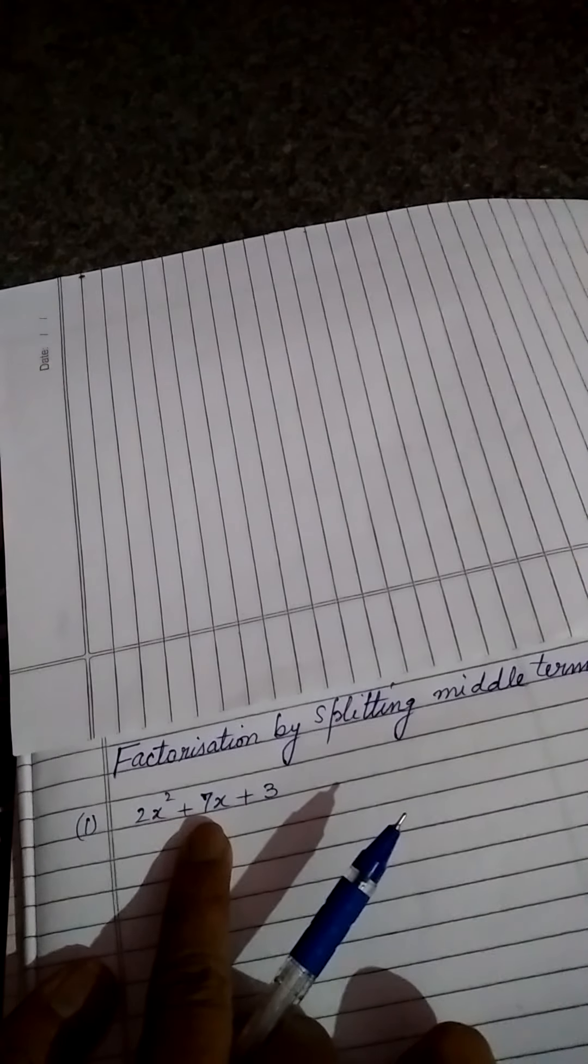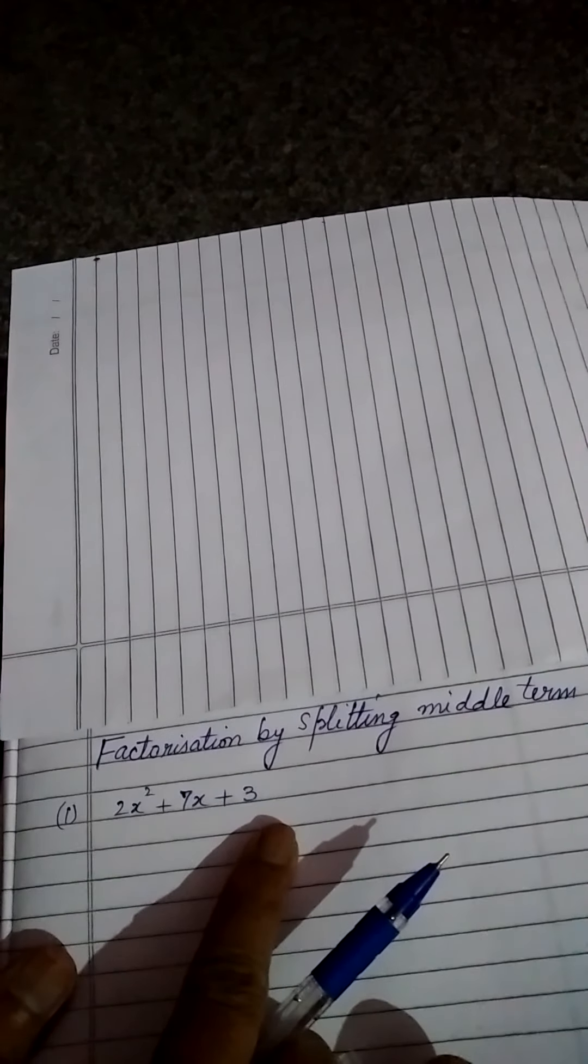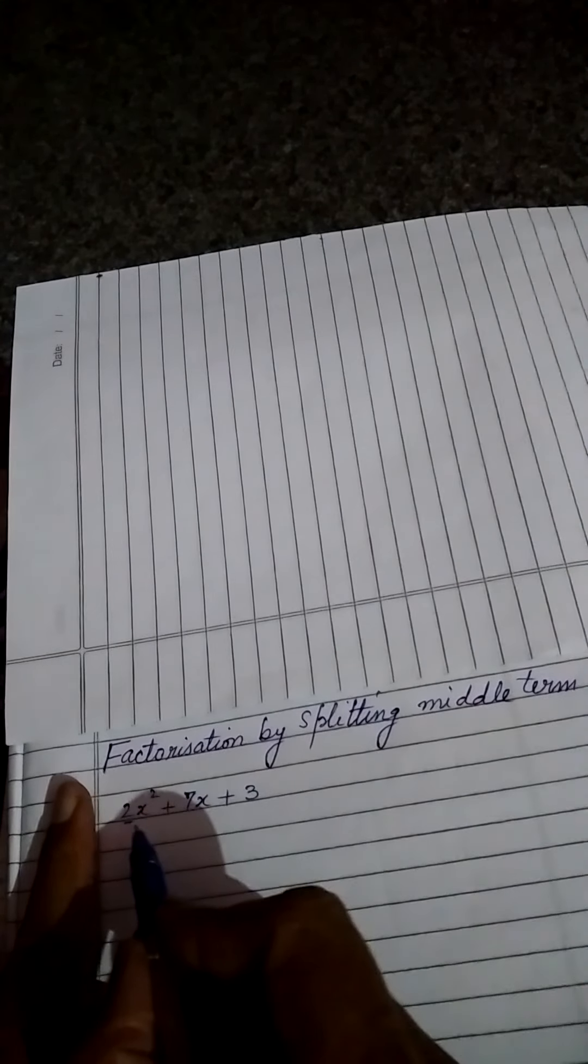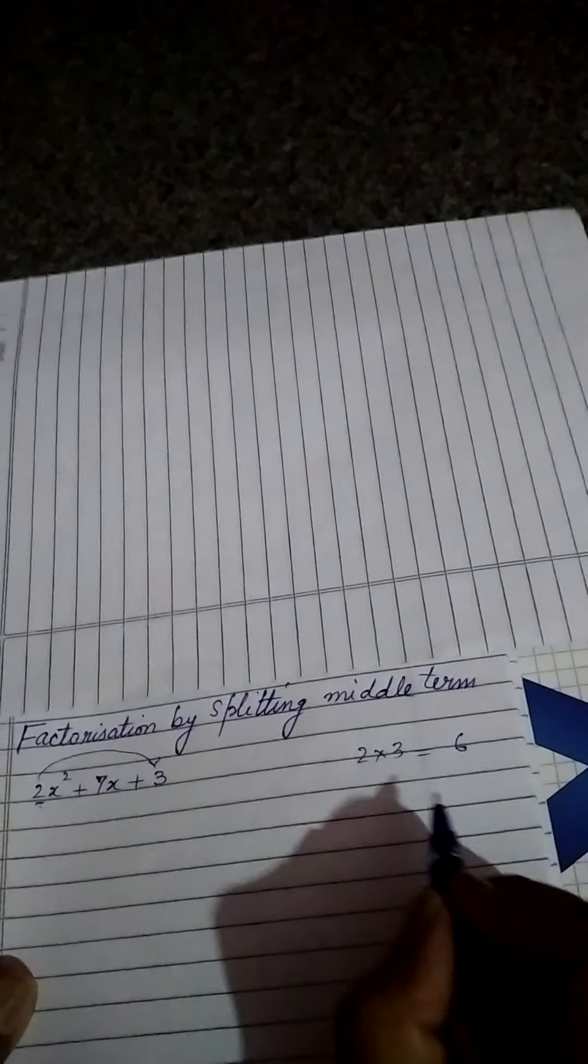Suppose we have 2x square plus 7x plus 3. So how to factorize by splitting middle term? First of all, we will see the coefficient of x square. What is the coefficient here? 2. So in place of 2, any other number will be there. If we don't have any number, then coefficient will be considered 1. So here we have this coefficient 2, so it will be multiplied by this constant term. It will be multiplied by 3. So 2 into 3 will be equal to 6. This product has come 6. Now we will do its factors.